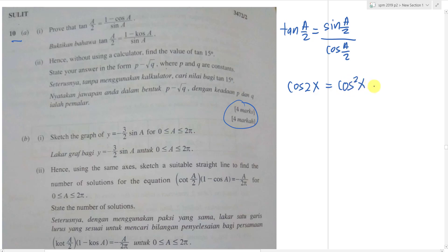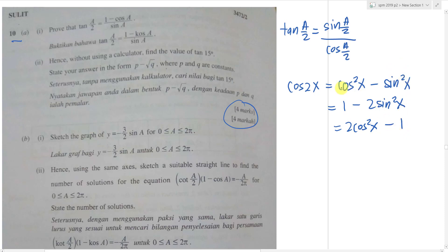The second formula: change cos²x to 1 − sin²x, giving 1 − 2sin²x. Or change sin²x to 1 − cos²x, giving 2cos²x − 1. These three formulas are given, so no need to worry. I want you to pay attention to the second and third formulas — I'll use both to get the sine and cosine half-angles.